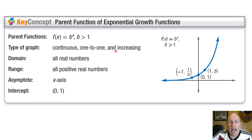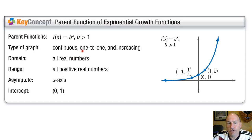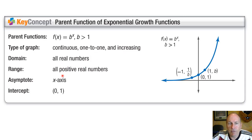Let's look at the parent function of exponential growth functions. The parent function is f(x) = b^x, where b is a value greater than 1. It is continuous — it works for all values of x. It is a one-to-one function because there's only one output for every input. It's also always increasing. Its domain is the set of all real numbers, and its range is all positive real numbers.